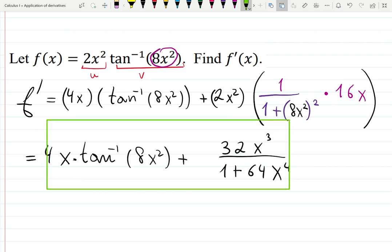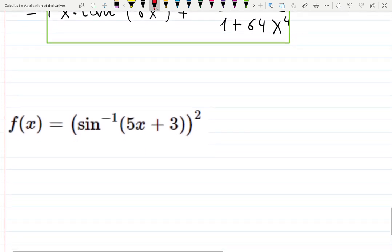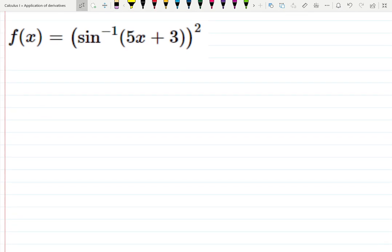Not too bad, right? Even though we had product rule, it's actually pretty doable if you do it step by step. Just make sure you identify u prime v plus u v prime. Simple as that. We started with simple product rules, and now you see how far you guys learned. Now you know how to do inverse trig functions. And the last one. Third example.